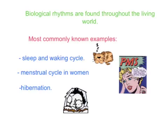Biological rhythms are found throughout the living world and happen to us in ways we might not even recognise. This includes changes in levels of brain chemicals and the increasing and decreasing of body temperature over a single day. More commonly known examples include the sleep-waking cycle, which we all go through including all animals, and the menstrual cycle, which 50% of the population go through.